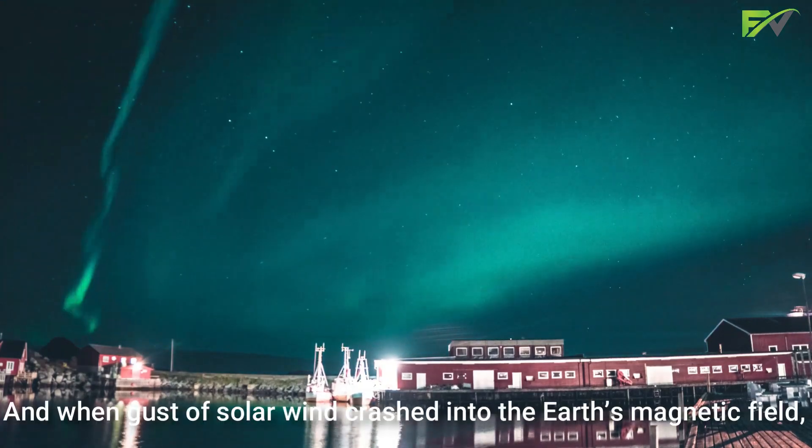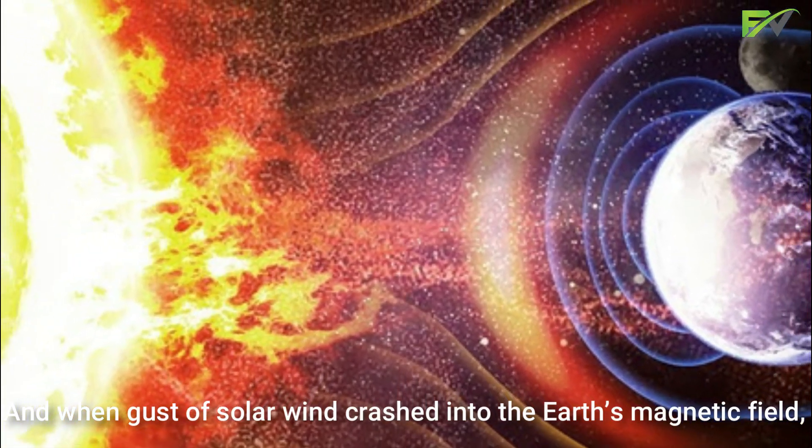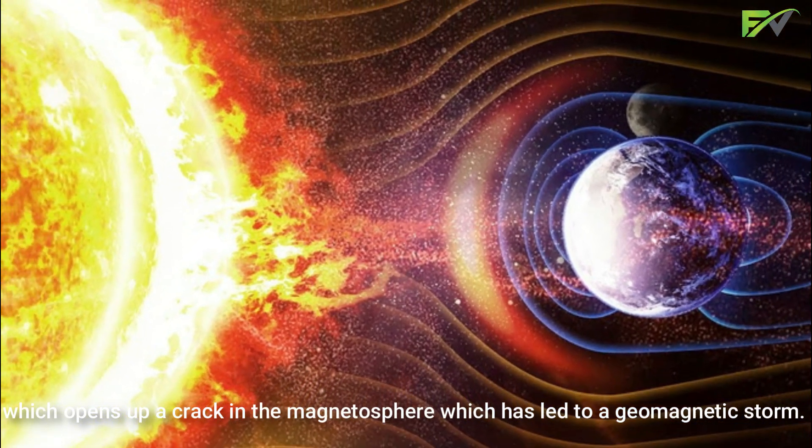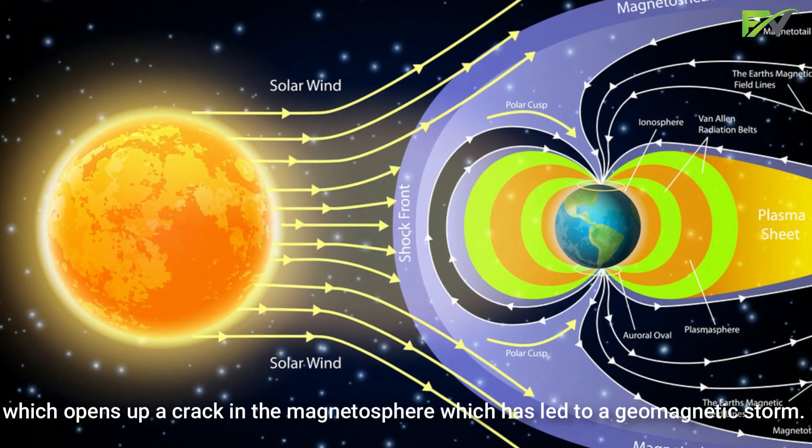And when gusts of solar wind crashed into the Earth's magnetic field, it opens up a crack in the magnetosphere which has led to a geomagnetic storm.